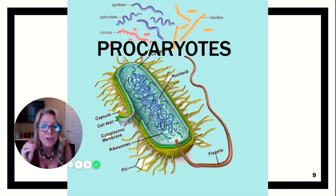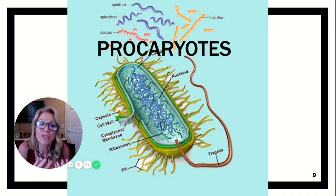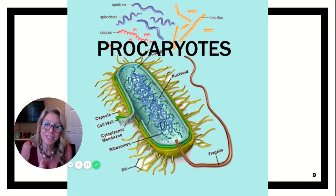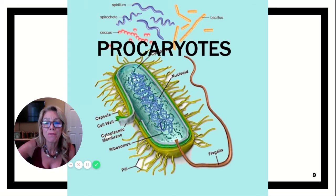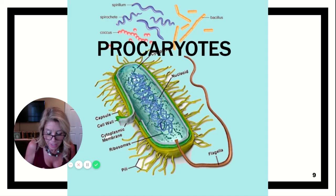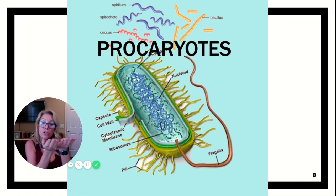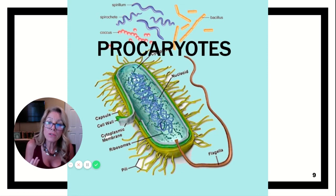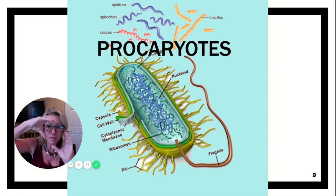When you hear 'archaea' you think 'ancient.' When they first discovered these extremophiles, scientists thought they were very old, early prokaryotic cells — that's why they called them archaea. But as it turns out, bacteria came first and archaea evolved from that. In fact, archaea has properties very similar to some eukaryotes. The two domains that contain prokaryotic cells are Bacteria and Archaea.